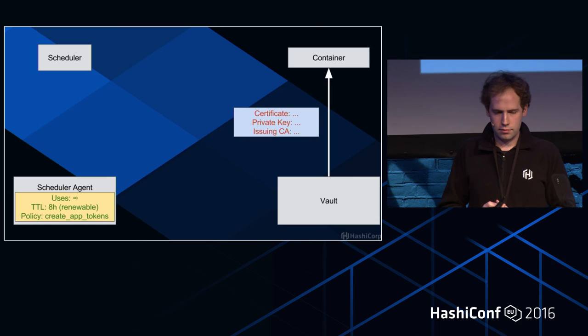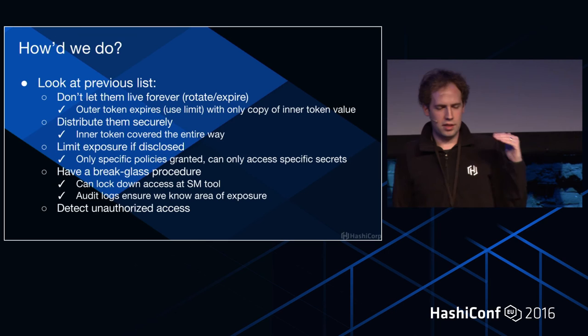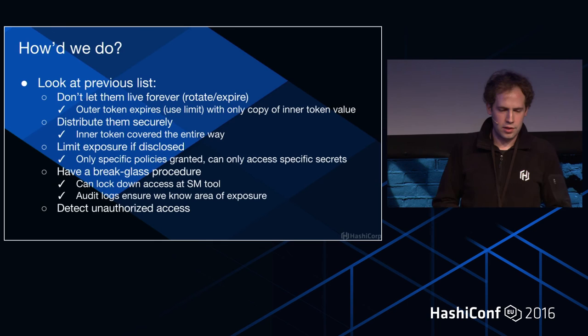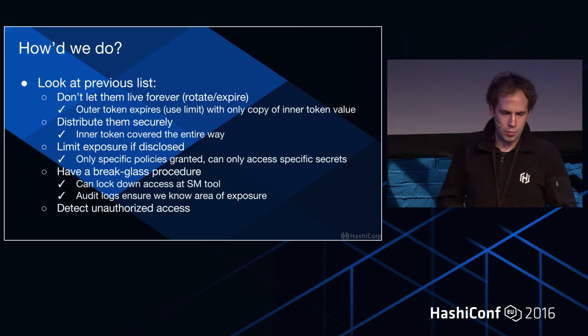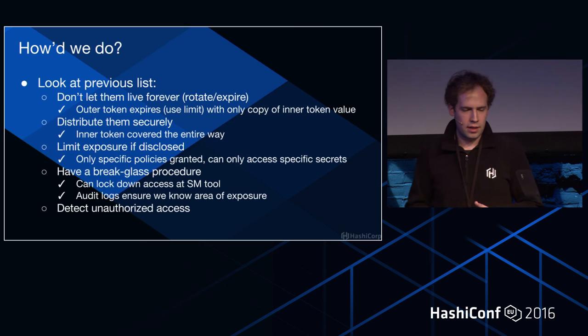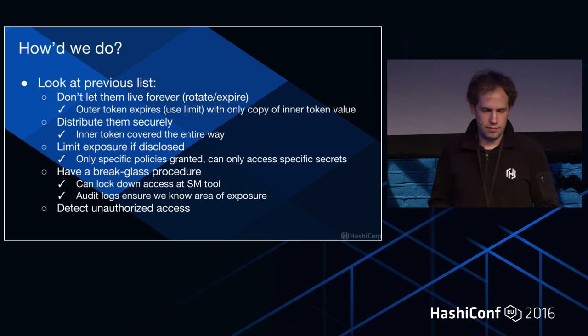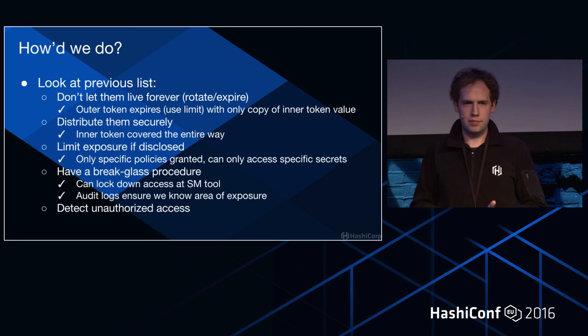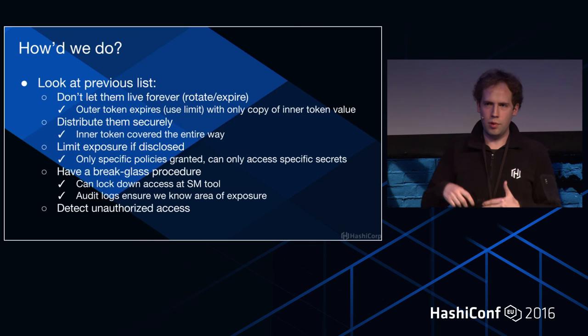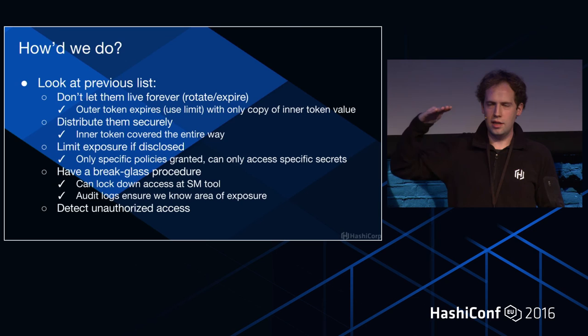How did we do against our list? We said don't let secrets live forever — the outer token has a use limit and expires at 30 seconds, and it has the only copy of the inner token value. When that token gets revoked, that inner storage goes away. We distribute them securely — the inner token is covered the entire way; it's never divulged in anything that could be logged publicly. If disclosed, we have limited exposure — it has only the policies necessary for it to function. We have a break glass procedure — we can lock down access at the secret management tool if we've detected disclosure. Audit logs ensure we know the area of exposure via a consistent ID.